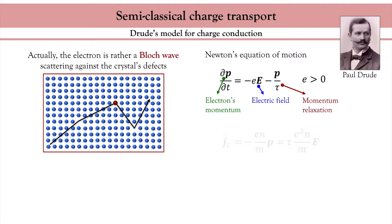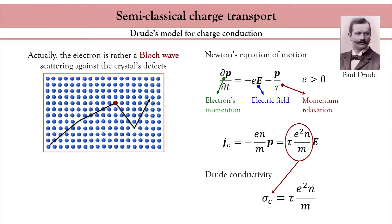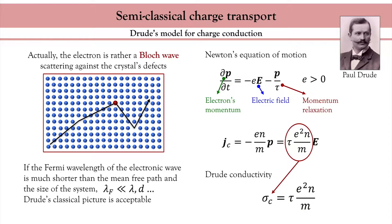Solving this equation gives the charge current and the conductivity, which are then proportional to the relaxation time. Drude's model assumes electrons behave like particles. We do know that electrons are also waves, so Drude's model works as long as the Fermi wavelength, which characterizes the electron wave, is much smaller than the mean free path, which characterizes the mean distance between two collisions.